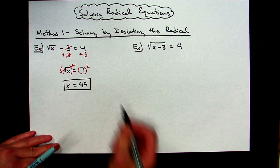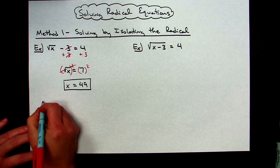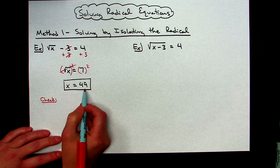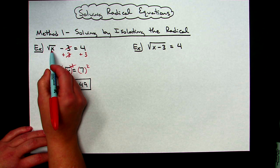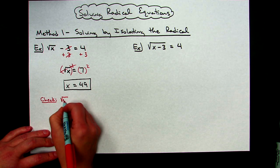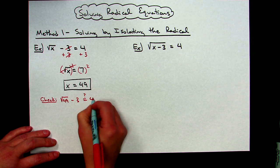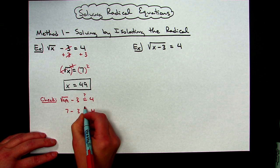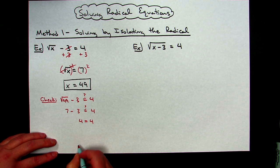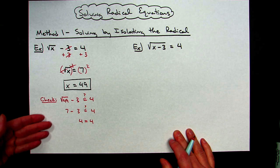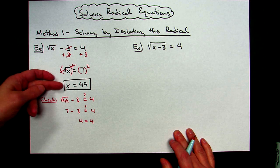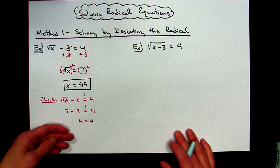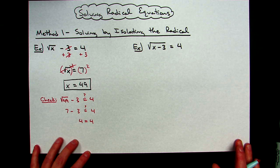Now what you need to do on each one of these is go through a check to make sure your solution actually works. I've come up with x equals 49, so I'm going to plug it back into my original equation. Is the square root of 49 minus three equal to four? Square root of 49 is seven, and seven minus three is four — so four equals four. It checks, so I know this is a solution. If it did not equal the original equation, that would be a no solution, called an extraneous root, which we'll get into in another example.